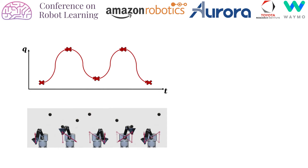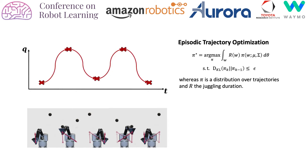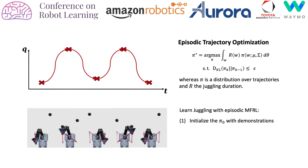It also allows us to sample smooth trajectories during exploration by parameter perturbation. We formulate the learning problem episodically with REPS and initialize the mean of the search distribution π₀ given a demonstration of a roughly hand-tuned movement primitive.